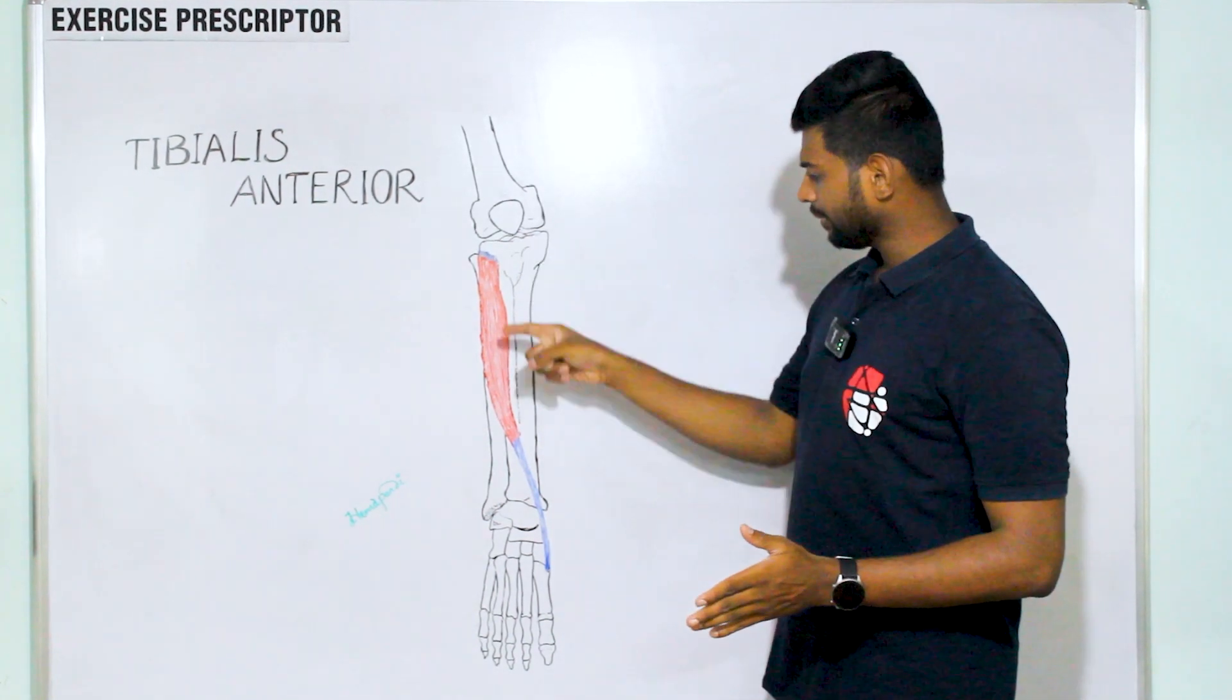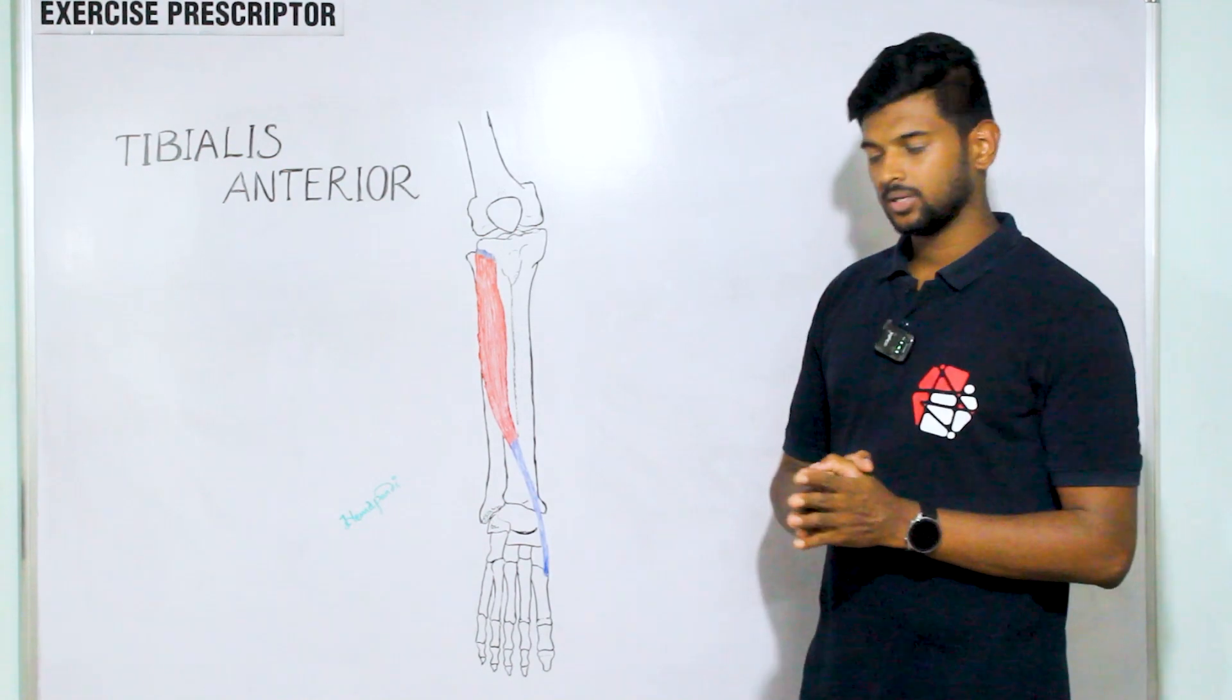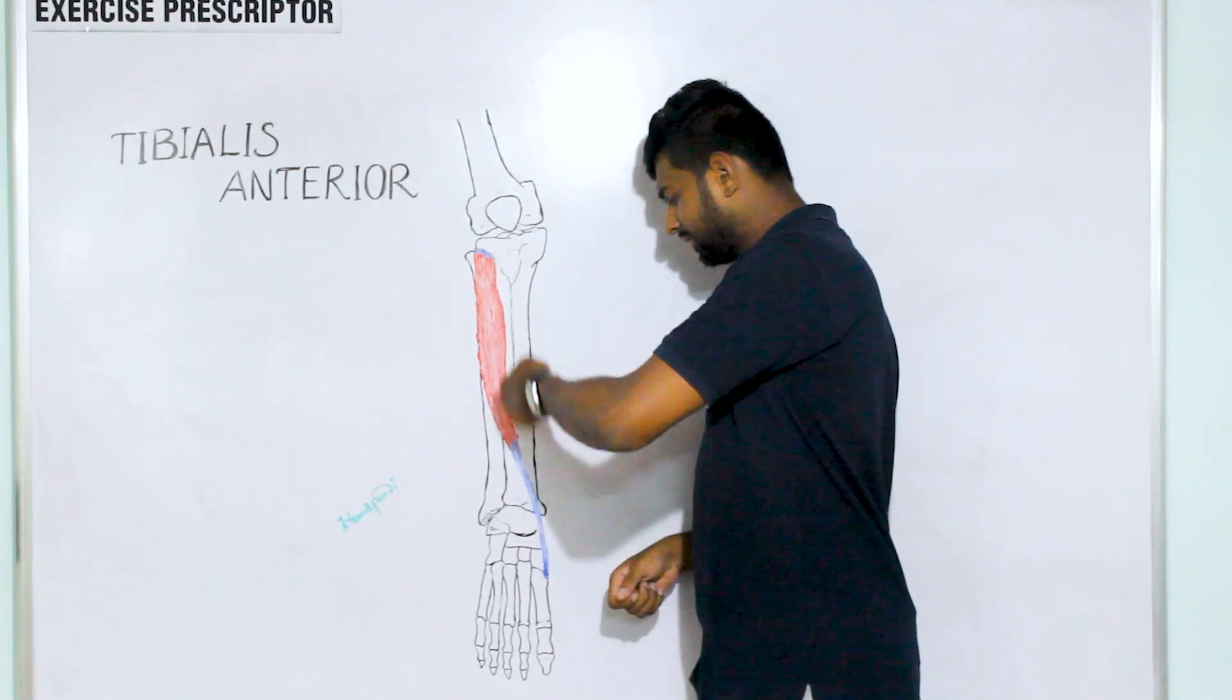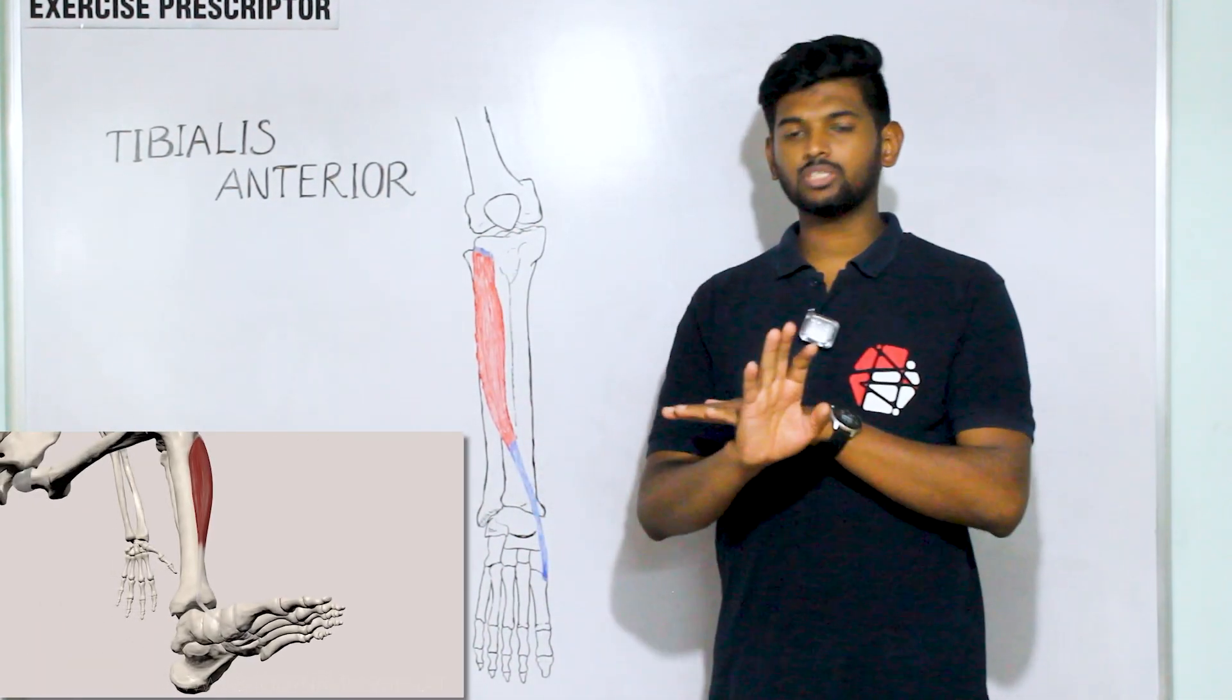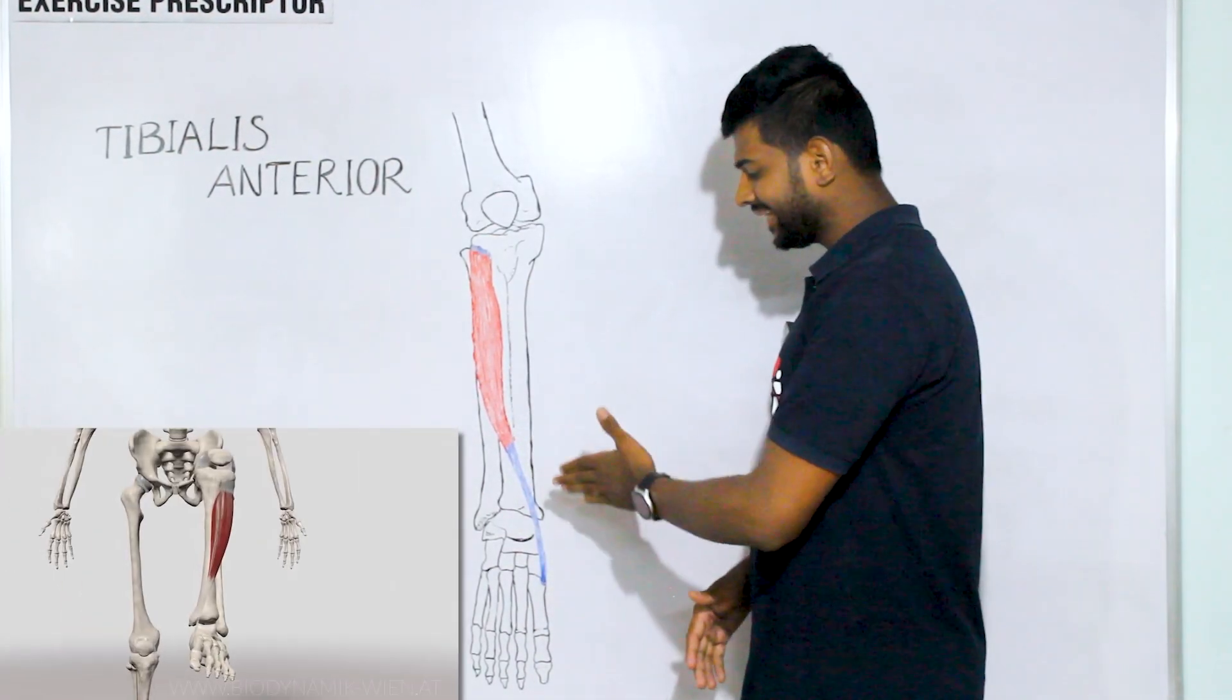Standard mover action of the tibialis anterior: these fibers are running vertically and attaching to the cuneiform and first metatarsal bone. If the pull happens in this way, it creates the dorsiflexion of the ankle joint.